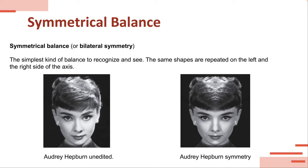Symmetrical balance, or bilateral symmetry, is generally the easiest to recognize and see — basically things are the same on the right and left sides. In our example, we have a photograph of Audrey Hepburn, an unedited and an edited version. Generally the human face is symmetrical — technically it's not, technically it's asymmetrical. You can see one earlobe is a little bit lower than the other, the eyes are slightly different, the sides of the nose are technically different. But in general, the human face, body, etc., is an example of symmetrical balance.